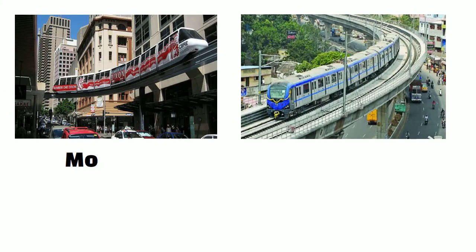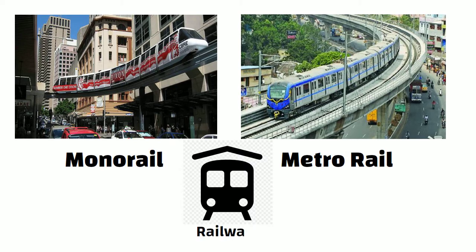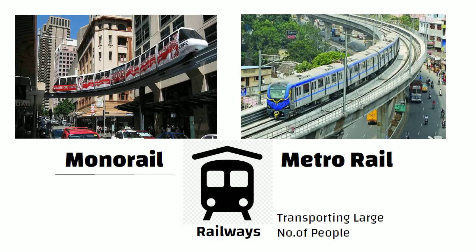Hello friends. Monorail and Metrorail are two popular forms of transport in the world today. They are both railways and are capable of transporting large numbers of people at once. However, they are different from one another. Let us check it out in this video.